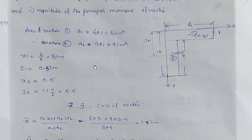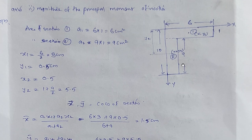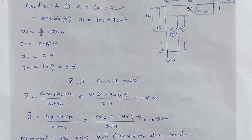The section is divided into two parts: section 1 and section 2. The coordinate of section 1 is (x1, y1) and section 2 is (x2, y2). The centroid x-bar is found using: x̄ = (A1·x1 + A2·x2) / (A1 + A2). We get x̄ equal to 1.5 cm.